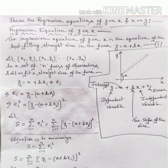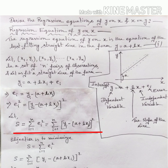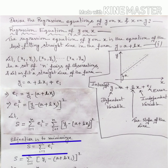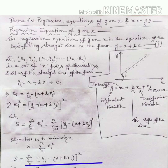In the least squares method we minimize the sum of all squared error terms. Let S = Σ(i=1 to n) e_i². Therefore S = Σ(i=1 to n) (y_i − (a + bx_i))². Our main objective is to minimize this expression, where y_i is the dependent variable, x_i is the independent variable, and a and b are the two constants of the regression model.